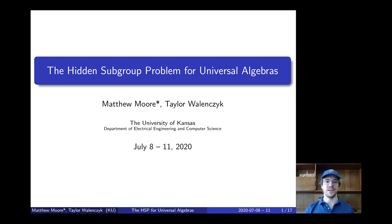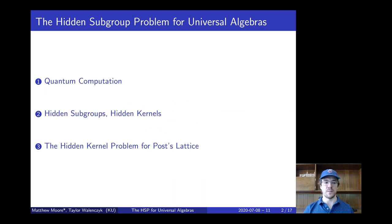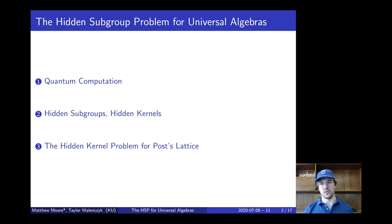Hi, everyone. Thanks for tuning in today to hear my talk on the hidden subgroup problem for universal algebras. My name is Matthew Moore, and this is joint work with a graduate student of mine, Taylor Walden-Sizek, at the University of Kansas. I'd like to begin first by talking about, from a very high level, quantum computation, which is the domain that the hidden subgroup problem originates in. We'll then continue with discussion of the problem itself, as well as its generalization to universal algebras, which I'm calling the hidden kernel problem. And lastly, the main results: a complete classification of the quantum and classical complexity of the hidden kernel problem on powers of a two-element domain.